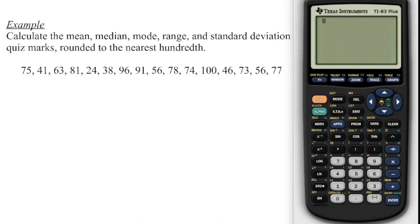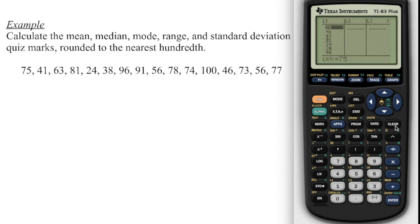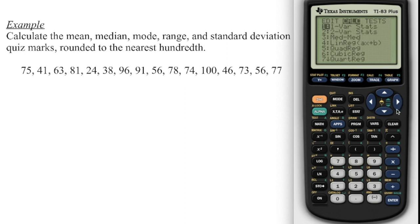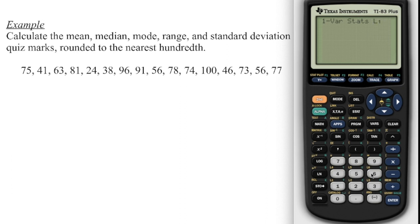The steps begin the same way on the TI-83 calculator. Go into STAT, number one to enter the data, type all your data, then go back to STAT, over to CALCULATE, and choose one-variable statistics. Press ENTER. Now you have to put List 1 — on your calculator, List 1 is printed above button one, so press second function, then number one. That puts all data from List 1 in there. Press ENTER and here's your data.